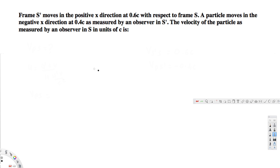Let's look at this problem. The question asks: frame S prime moves in the positive x direction at 0.6c with respect to frame S. A particle moves in the negative x direction at 0.4c as measured by an observer in S prime. What is the velocity of the particle as measured by an observer in S, in units of c?